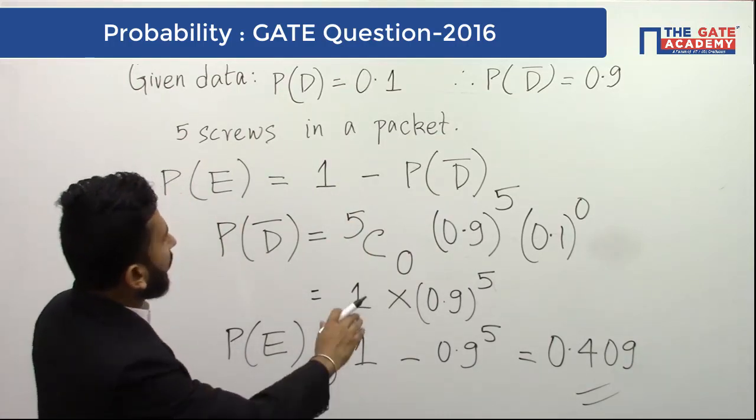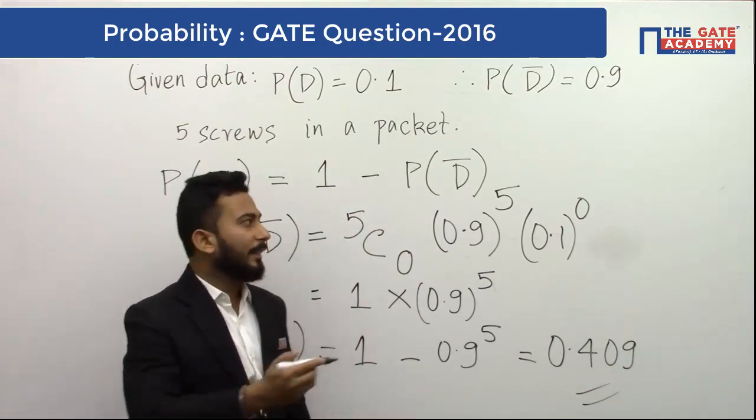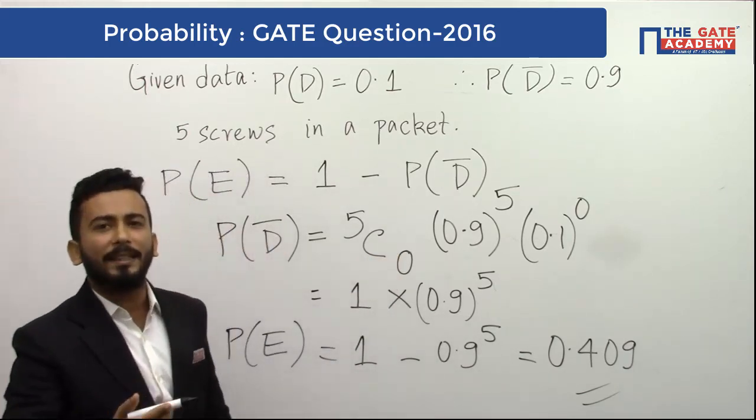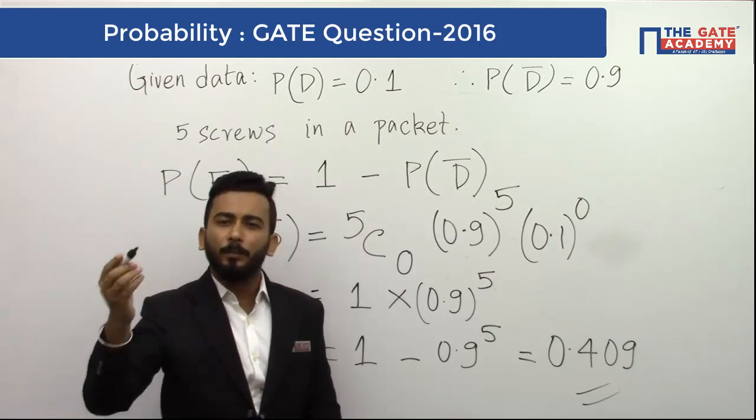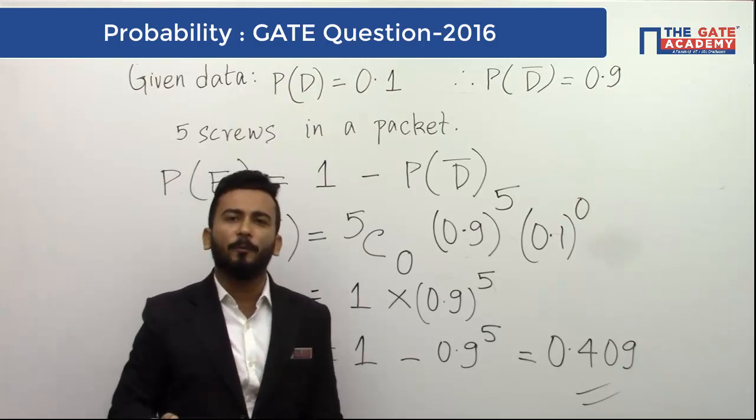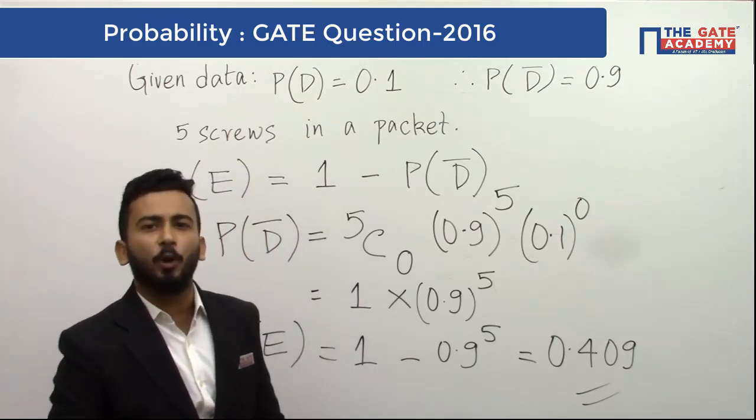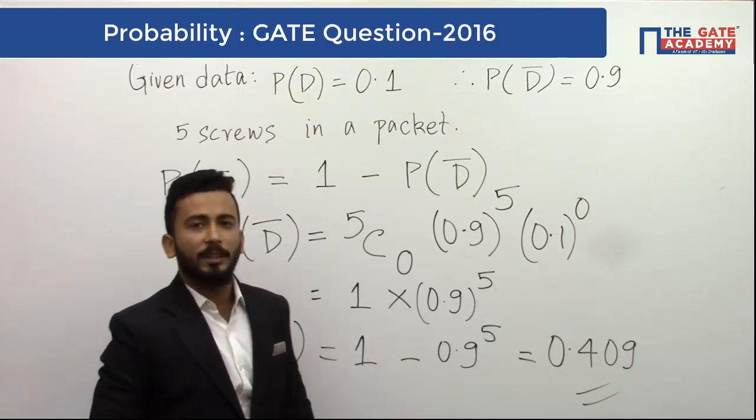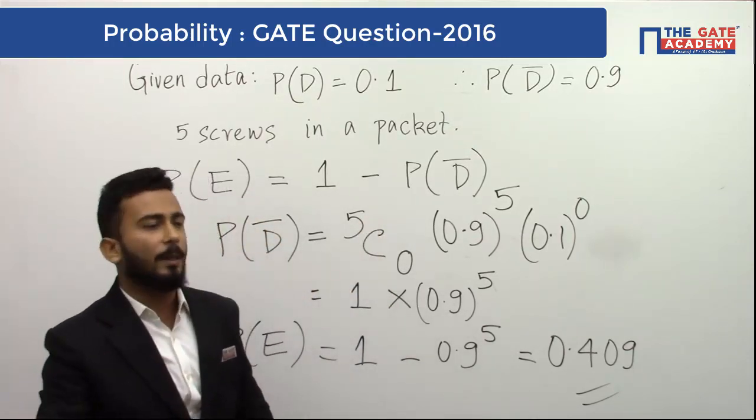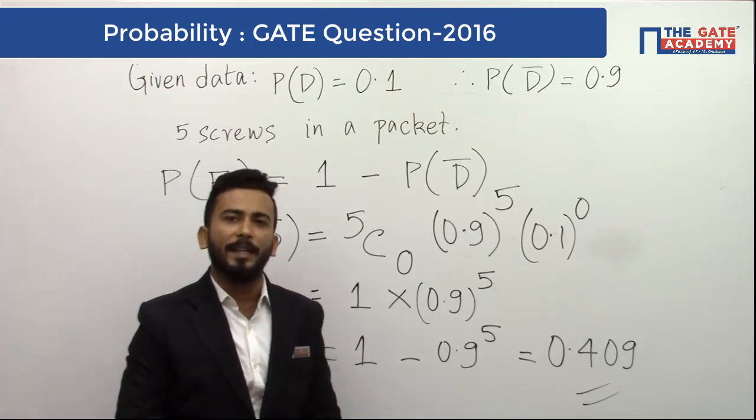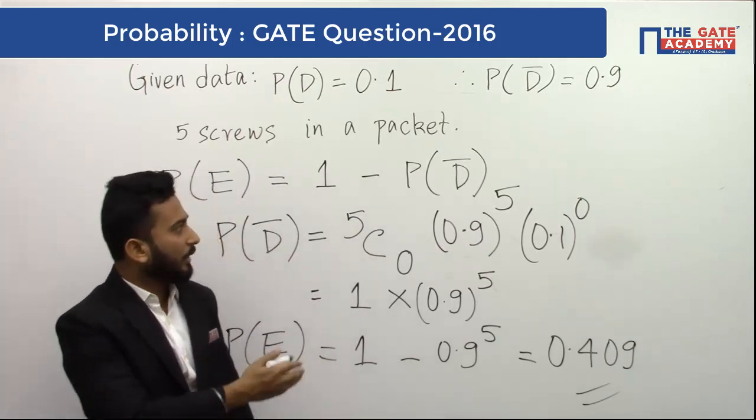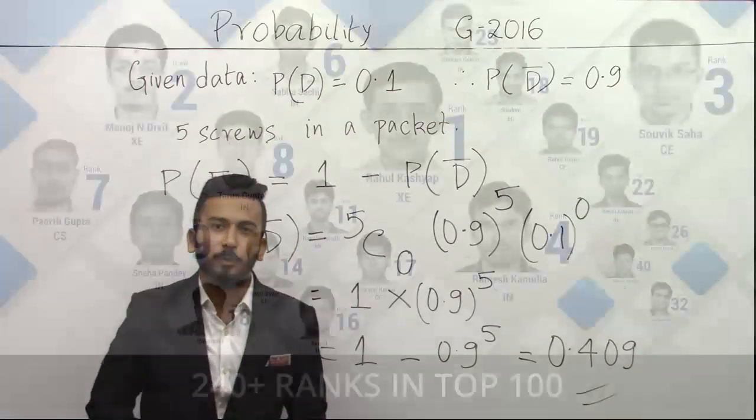You could also have done that by finding individual probabilities that the packet is containing 1 defective screw plus probability of 2 defective screws. That would also be fine. But then it would take much more time of yours. And by this method, when we find the probability of non-defective screws, we saved here a couple of minutes which can be used later for other questions. So this was the solution. Thank you.